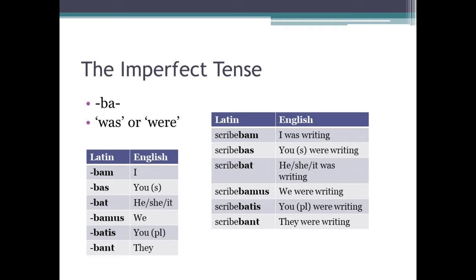Scribabamus means 'we were writing.' Scribabatis means 'you plural were writing.' And scribabant means 'they were writing.' So the endings are: bam, bas, bat, bamus, batis, bant — and that equates to I, you, he, we, you, they. So I'm afraid you're going to have to try to learn those endings.